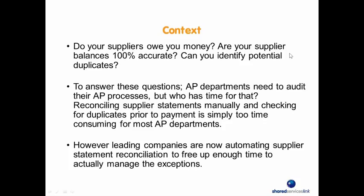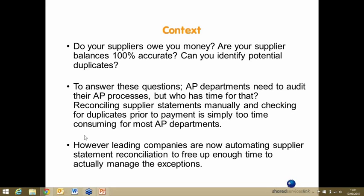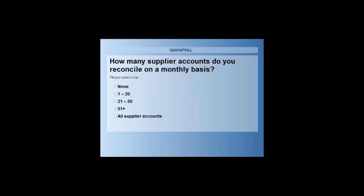Before I hand off to Anne, who's going to give us her case study experience, let's open up with our first poll for today. We've got two polls today. Coming up on your screen now is the first poll: how many supplier accounts do you reconcile on a monthly basis? If you could tick the box most appropriate for you — maybe none, 1 to 20 a month, 21 to 50 a month, 51 or more, or all supplier accounts.